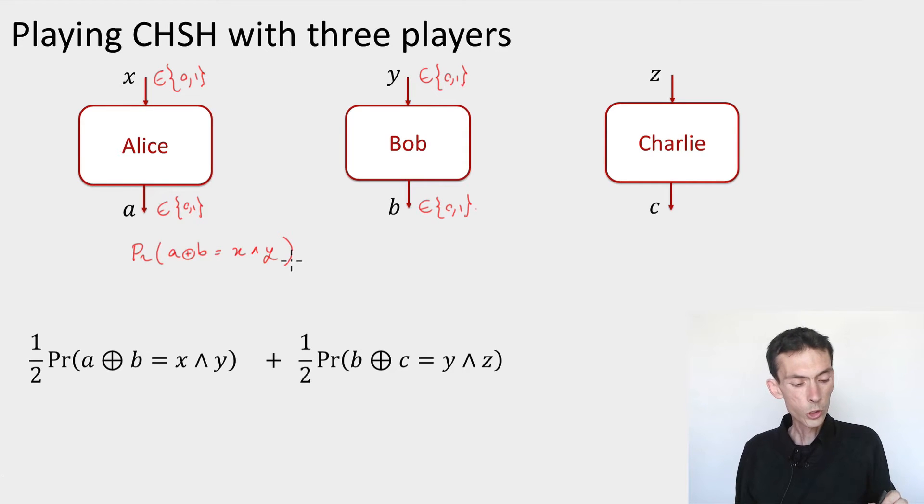And you saw that there is a way for them to achieve this by sharing an EPR pair, maximally entangled state of two qubits. So if Alice and Bob share the state psi_ab, which is 1 by root 2, |00⟩ plus |11⟩,